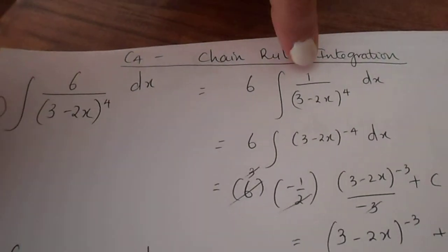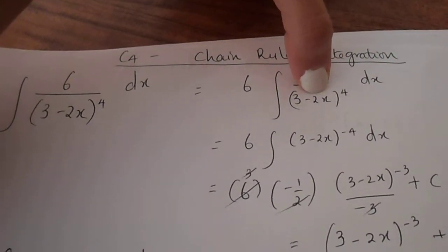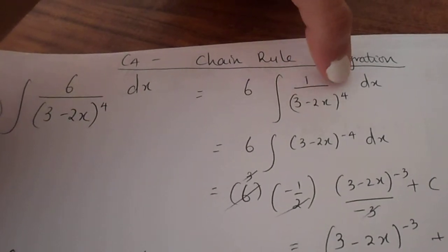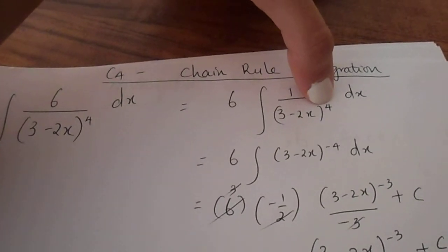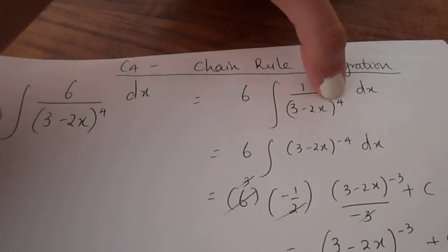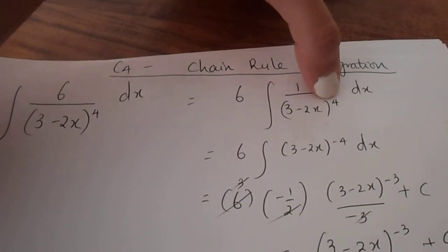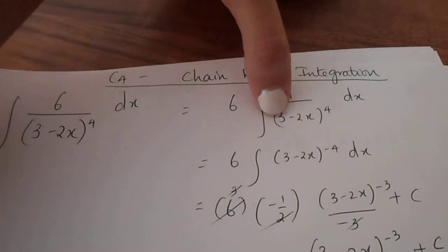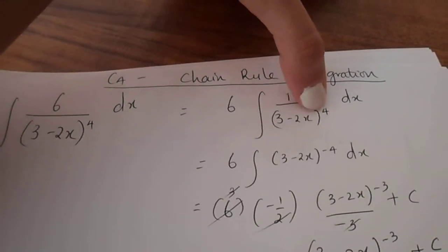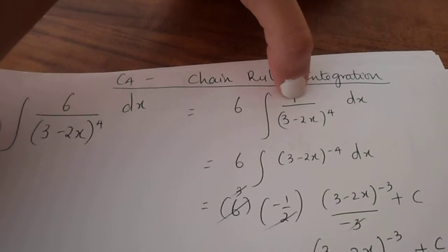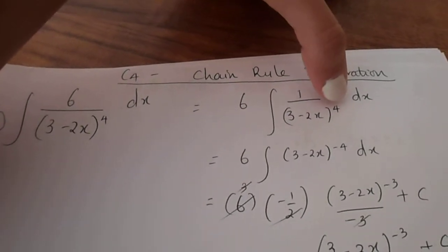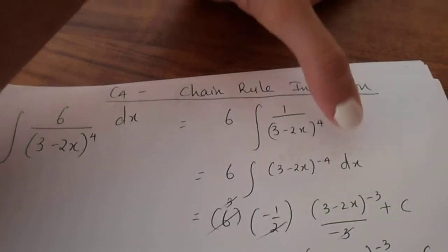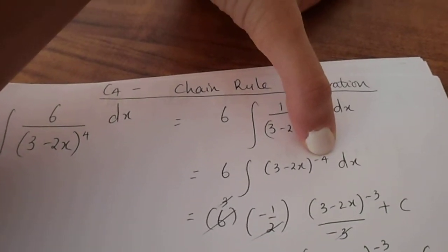If you have a constant in the numerator and an algebraic function in the denominator, the next crucial question to ask is: is the overall power equal to 1 in the denominator? If it's not equal to 1, as is the case here, you must lift the denominator, the 3 minus 2x to the power of 4, into the numerator. The overall power of 4 becomes a minus 4 there.